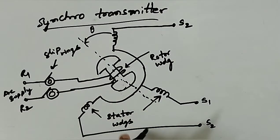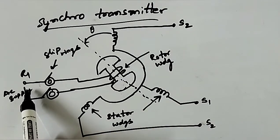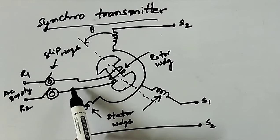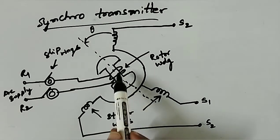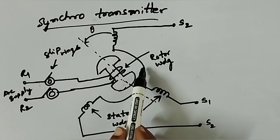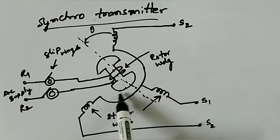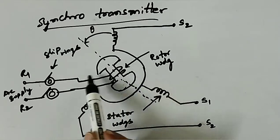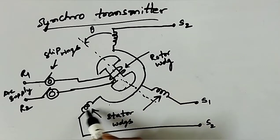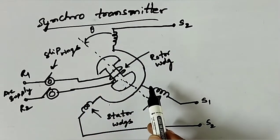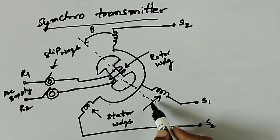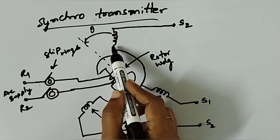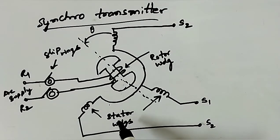The working principle of the synchro transmitter: when the rotor is excited by AC voltage, rotor current flows and a magnetic field is produced. The rotor magnetic field induces an EMF in the stator coils by transformer action. The effective voltage induced in any of the stator coils depends upon the angular position of the coil axis with respect to the rotor axis. This is the principle of the synchro transmitter.